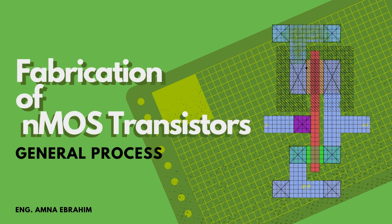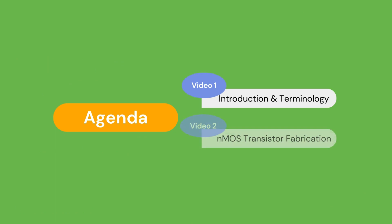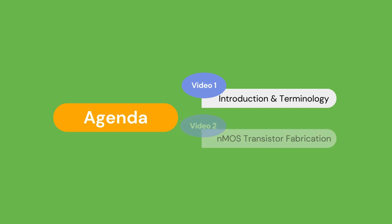If you haven't checked out the first video, I would highly encourage you to do so, as this video will pick up from where we left off last time and will heavily require your understanding of lithography. In this video, we will first briefly revise what N-type and P-type semiconductor materials are, and then walk through the fabrication process of NMOS transistors.